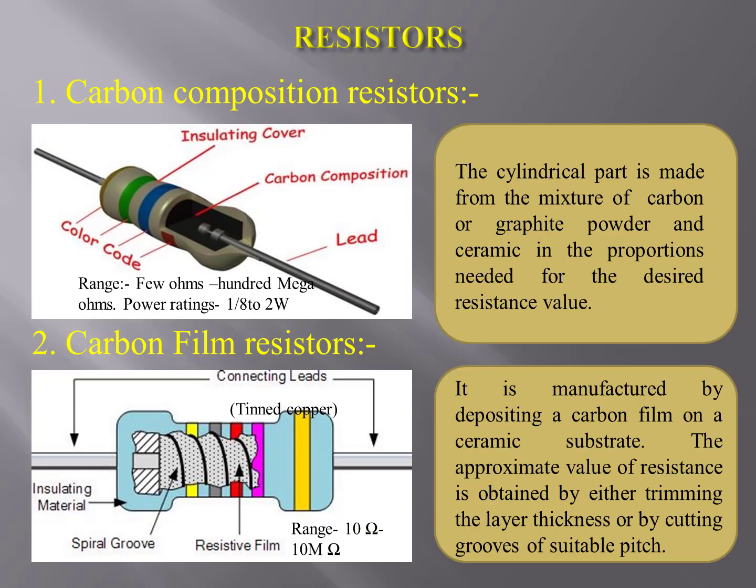You can see the carbon composition resistor on the screen. The cylindrical part is made from a mixture of carbon or graphite powder and ceramic in the proportions needed for the desired resistance value. This resistor is widely used in electrical and electronic gadgets.